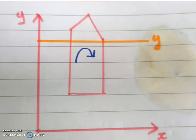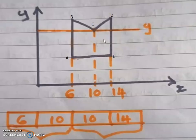Consider another example where the scan line also intersects a vertex point. Here we get an even number of intersection points — two. In this case, we consider the intersection point as 1. But in the previous example, we needed to consider the intersection point as 2.